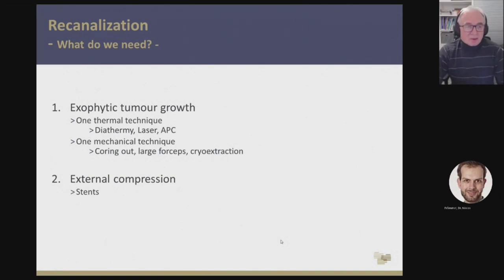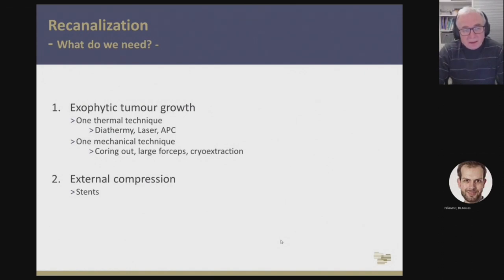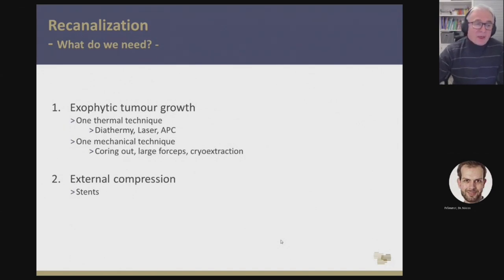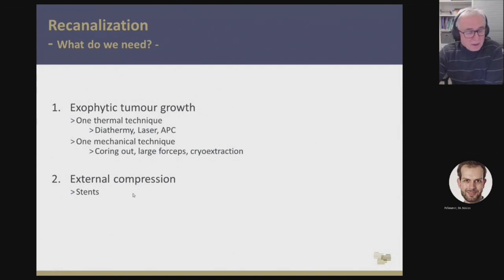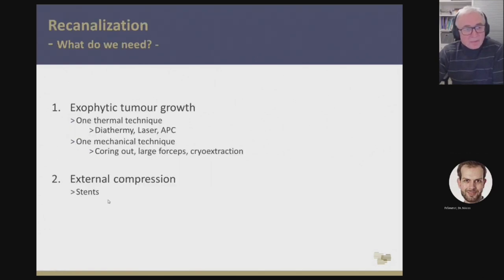So for re-canalization, what do we really need? I think we need one thermal technique — either diathermy, electrosurgery, laser, or APC — and one mechanical technique — either coring out with a rigid scope, large forceps with a rigid scope, or cryo extraction. We have to choose one from each category. I usually use diathermy, electrosurgery, and cryo extraction, but I also have experience with laser and APC. In most cases, one of each is enough. For external compression, we have stents, but for time reasons I can't go into that in depth.